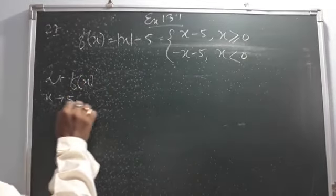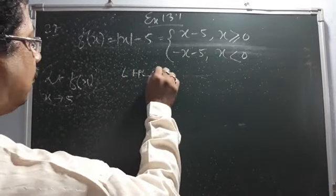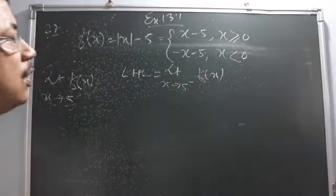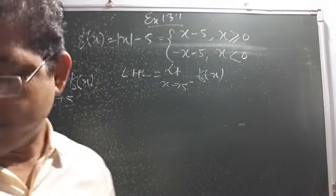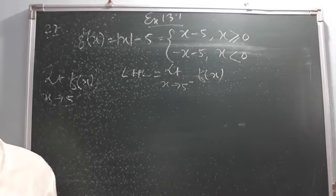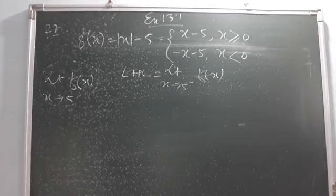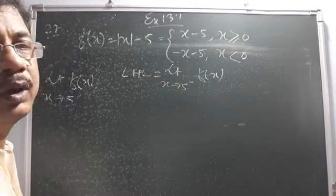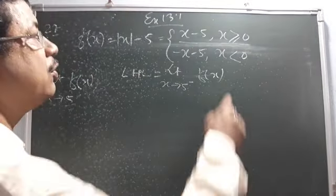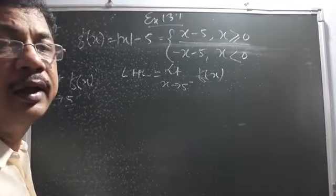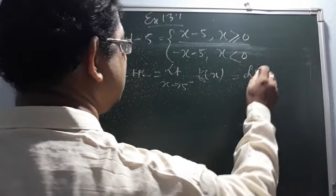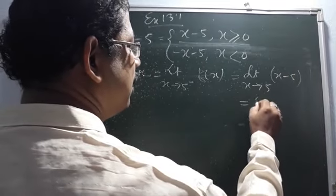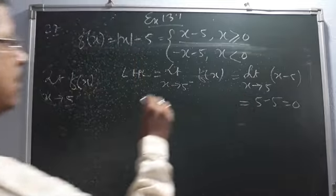Now, if we want to calculate this limit, we have to calculate LHL. LHL means limit as x tends to 5 minus of f(x). x tends to 5 minus means x is a little bit less than 5. Since x is a little less than 5, it is still greater than 0, so we use f(x) = x − 5. Applying the limit: 5 − 5 = 0. So our left hand limit is 0.